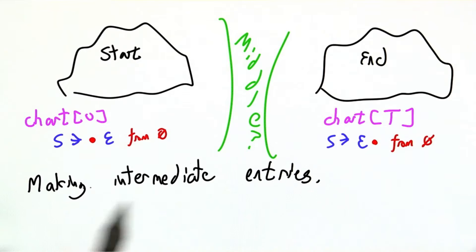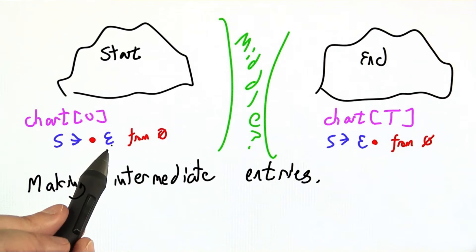We need to know how to make additional entries in our chart. For example, we have S goes to dot E. What do we do? Can we bring some more stuff in?